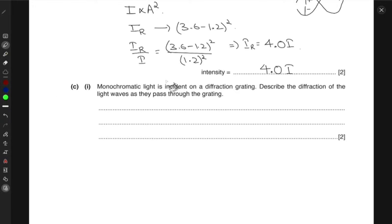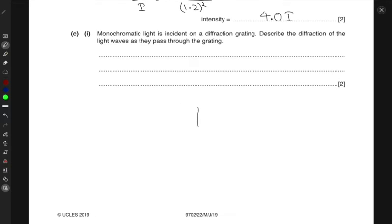Next, monochromatic light is incident on a diffraction grating. Describe the diffraction of light as they pass through the grating. So we know when, if I have a grating like this, and I have some waves coming in this way, these waves will bend in a circular pattern and move in all directions like this. So this is what happens. This is called the diffraction.